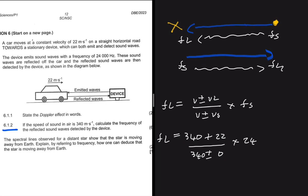Let me compute that real quick. So I have 340 plus 22 divided by 340 multiplied by 24,000, and I'm getting 25,552.94 hertz.